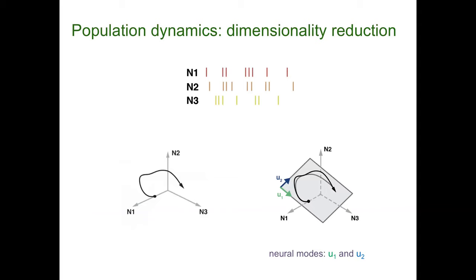The beauty of linear dimensionality reduction is that the methods are simpler and agreed upon — PCA or factor analysis means the same thing to everyone. Moreover, there exists a basis — a set of vectors spanning the low-dimensional manifold within the empirical neural space — that allows us to describe it. These vectors are specific combinations of neuron activity that we call neural modes. Within the linear description, these neural modes are sufficient to describe the system's dynamics.